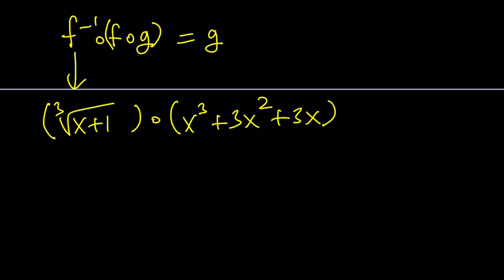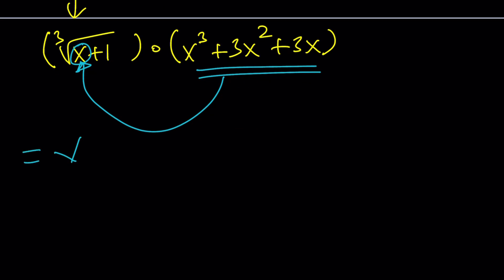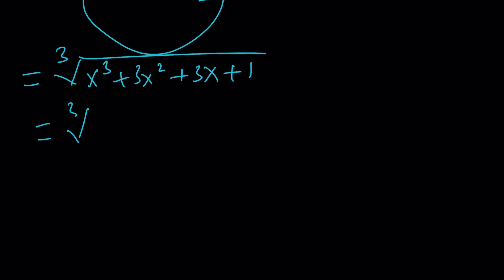Now, how do you compose two functions? Well, even though we write it from left to right, actually composition is done right to left. In other words, you have to take this and replace the x on the left with what's on the right. So you're going to get the following: cube root of x cubed plus 3x squared plus 3x that replaces x plus 1. And I'm hoping that you recognize this as the cube root of x plus 1 cubed. And this is equal to x plus 1.